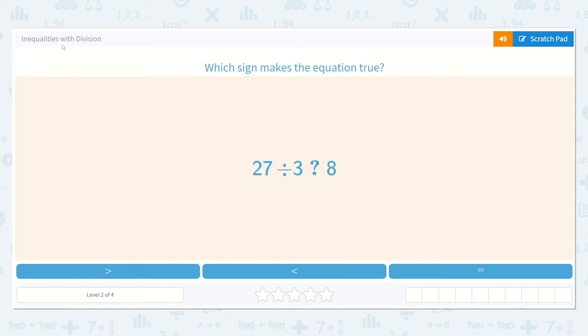Let's take a look at the lesson Inequalities with Division. Which sign makes the equation true? 27 divided by 3 is greater than 8? 27 divided by 3 is less than 8? Or 27 divided by 3 is equal to 8?